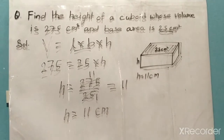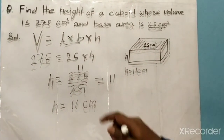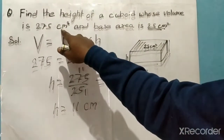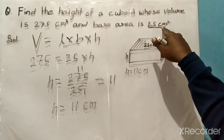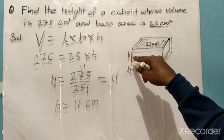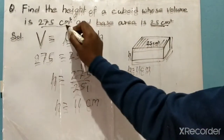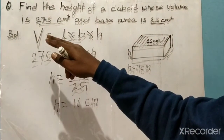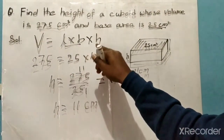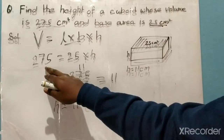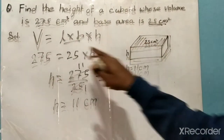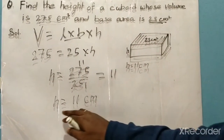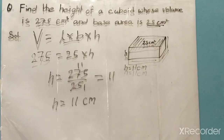Let's revise again. The question: find the height of a cuboid whose volume is 275 centimeter cube and base area is 25 centimeter square. We know that the volume formula for a cuboid is V equals length into breadth into height. So 275 equals 25 — that is the area of the base — into height. On solving, we find the height is 11 centimeter.